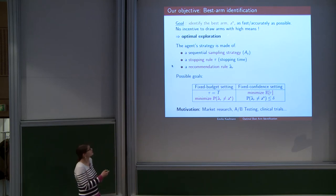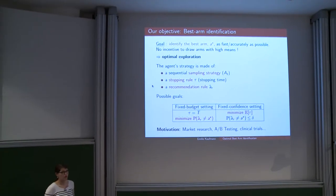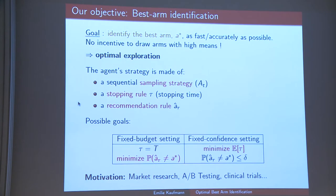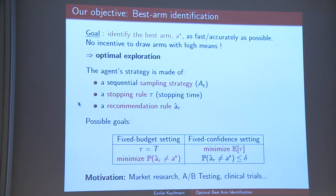So they would be more interested by this best arm identification problem. The goal is to identify quickly the arm A* — the arm with the highest mean — but this time without the incentive to draw arms that have high mean; we are only looking for a strategy that optimally explores the environment. The important part of the strategy will be the way we choose the arm to draw at the current stage based on the previous history, but we will also need some random stopping time telling us when we can stop the experiment — when we are convinced that we can identify the best arm — after which we make a guess A-hat for this arm A*.